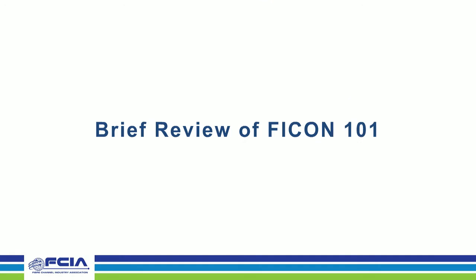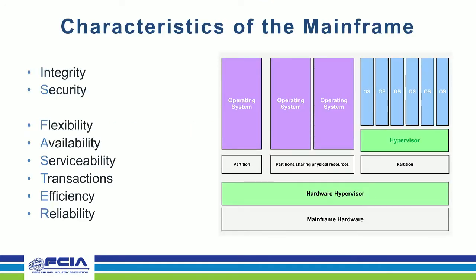For a brief review of FICON 101, I'll turn it over to Patty. Thanks Joe, and thanks everybody for joining. We're going to cover a lot of information in this hour. When we did FICON 101, Howard devised this acronym ISFASTER — it's an excellent way to summarize the characteristics of the mainframe. Those attributes exist because financial institutions, large retailers, government, and many more industries put their trust in the mainframe to host their mission-critical data and perform transactions against it.